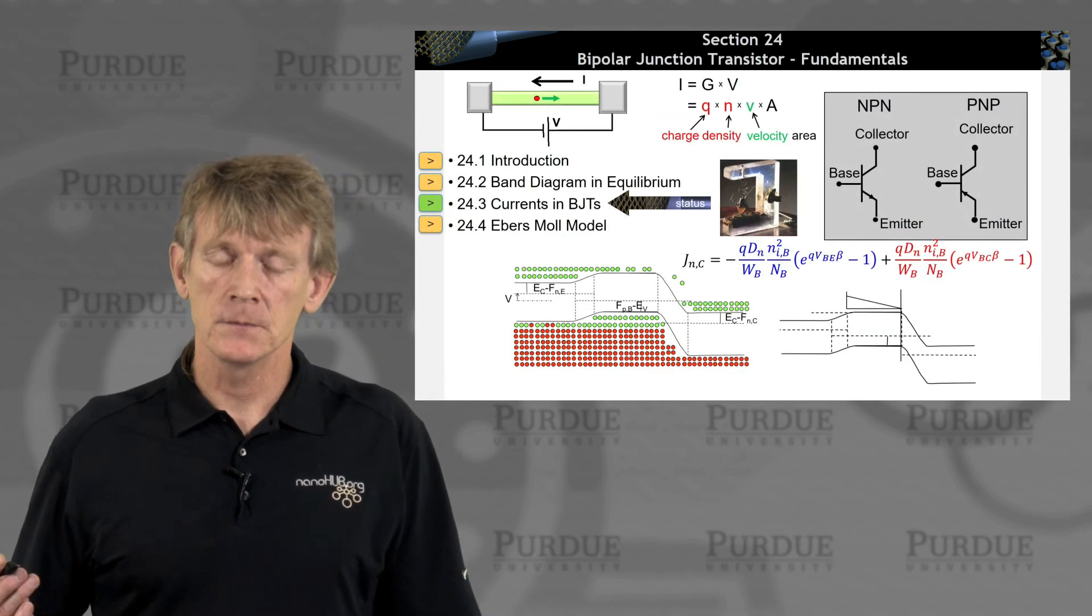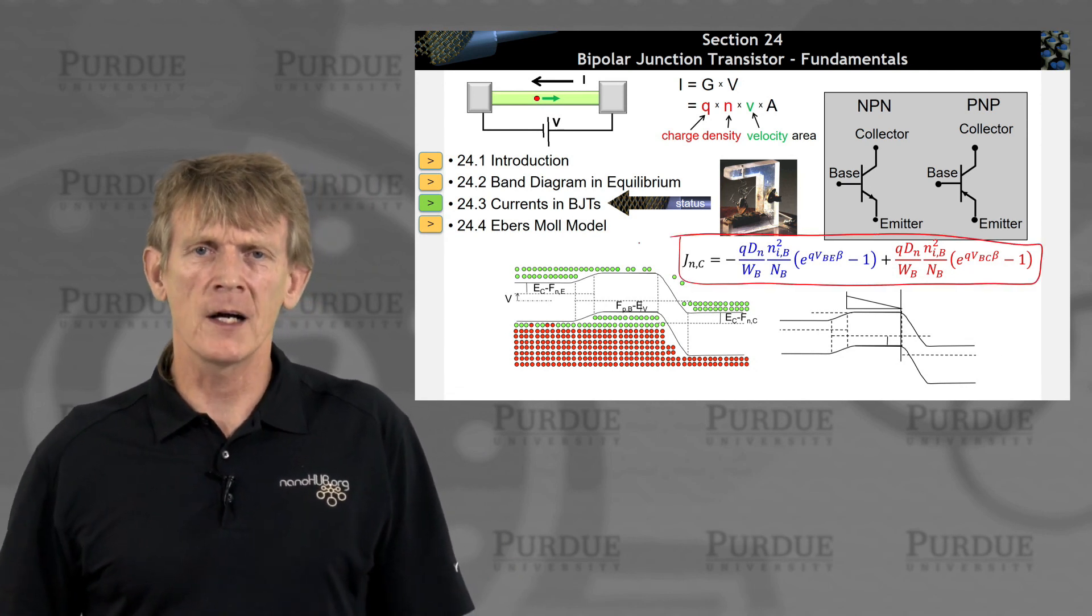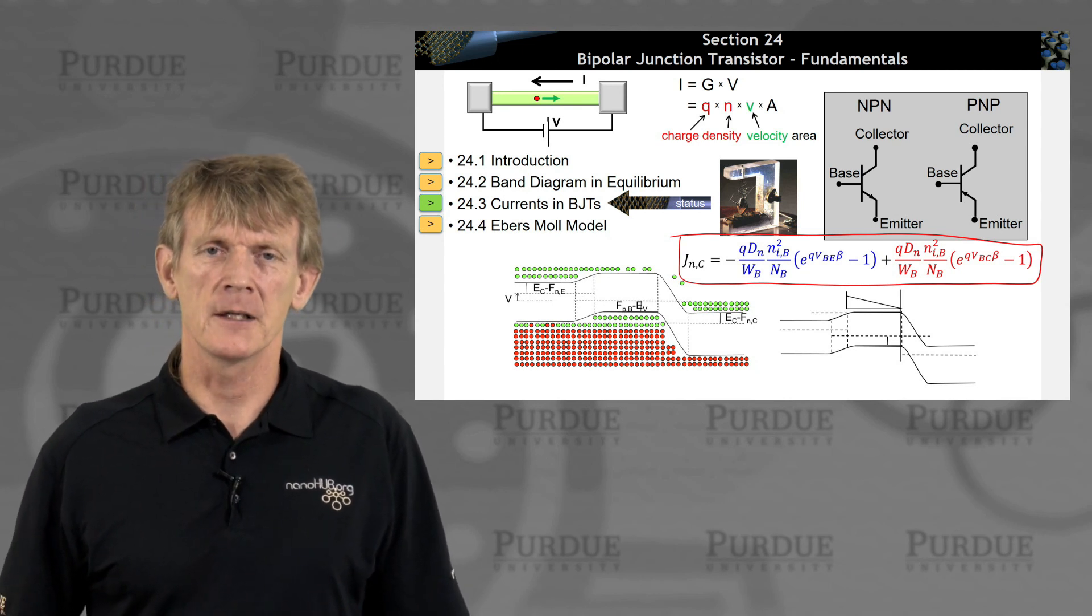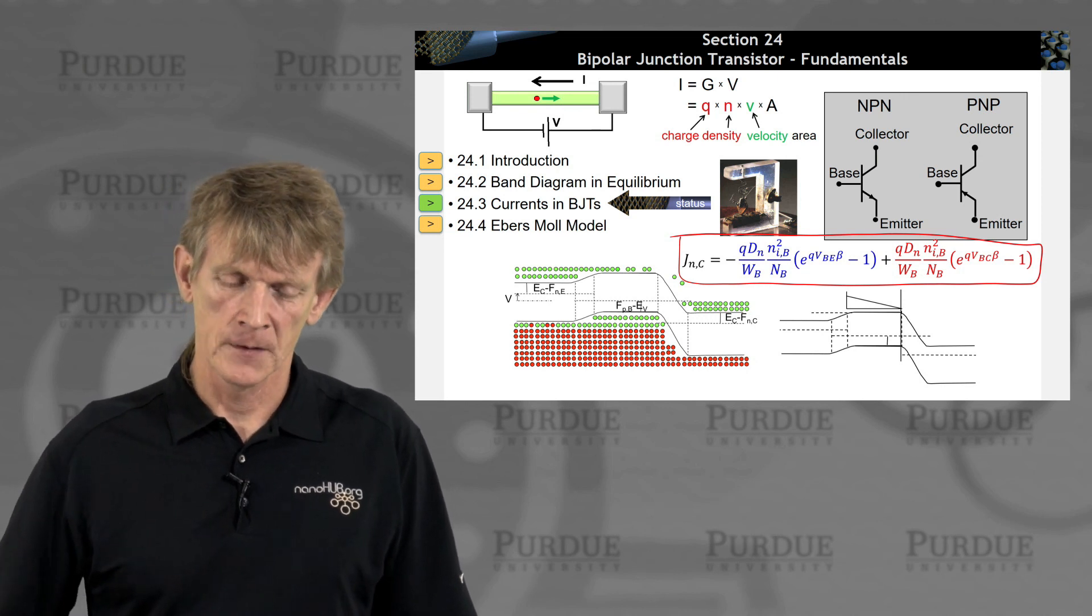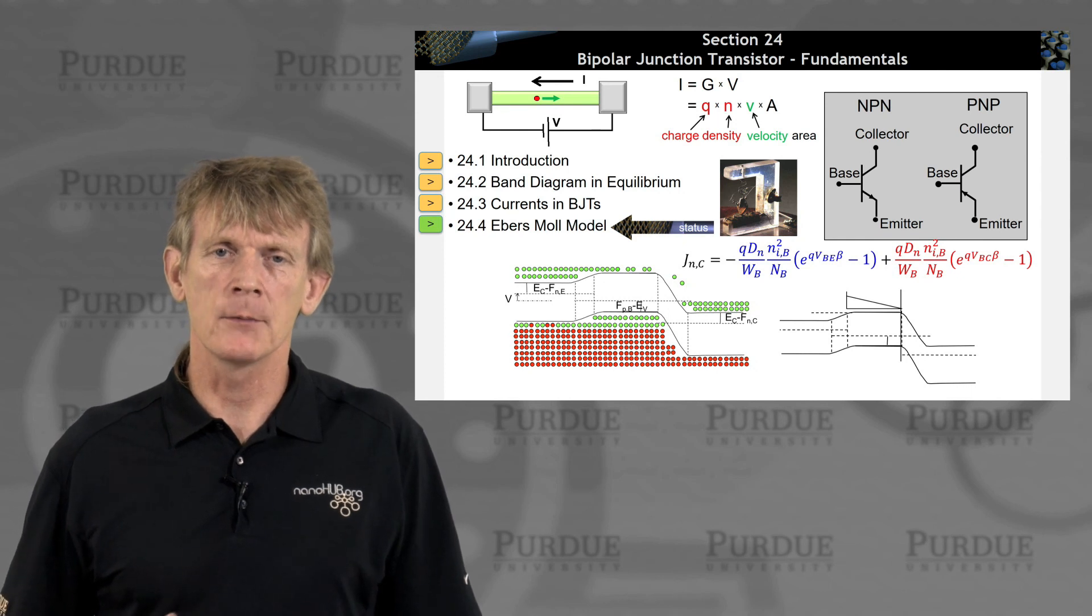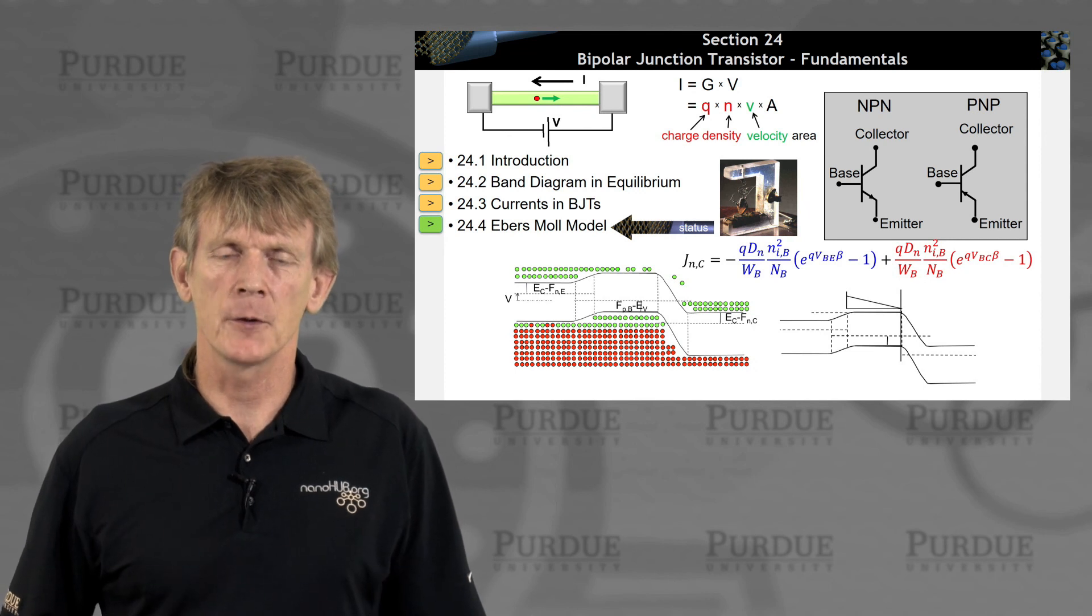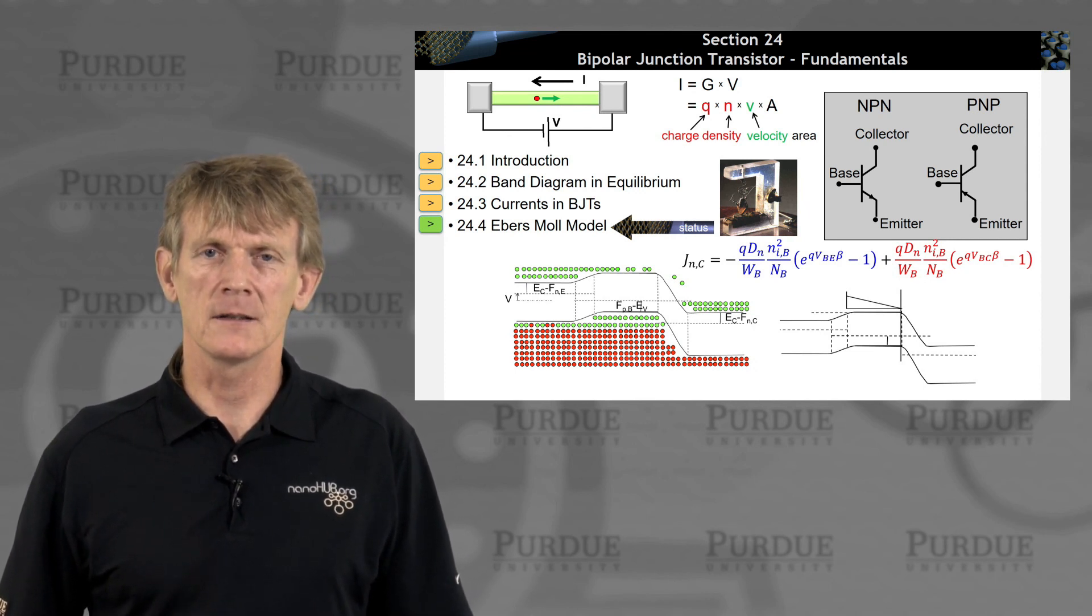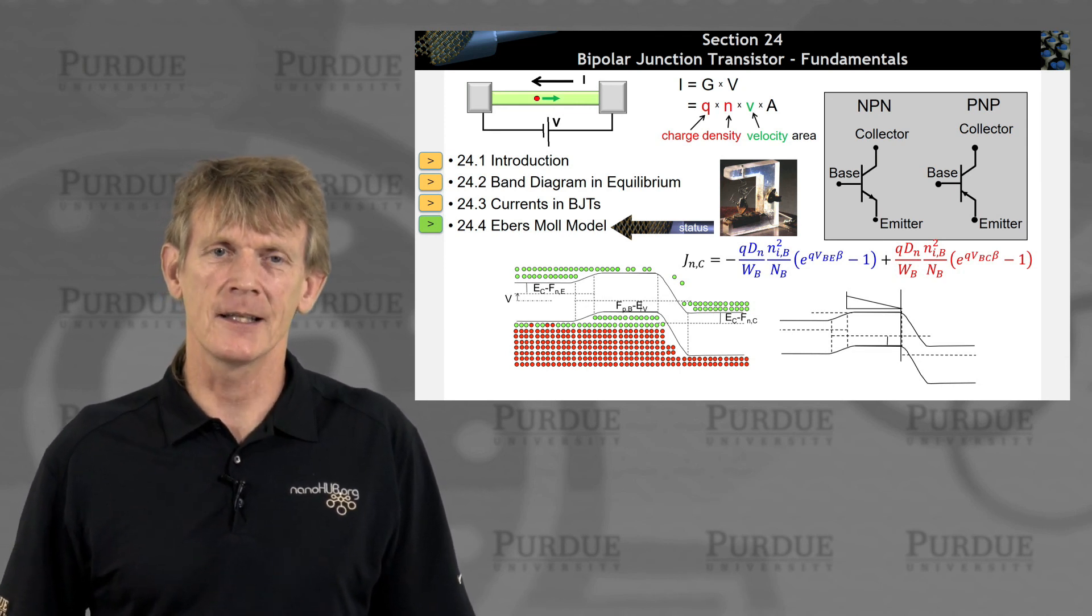So we have currents. Here's the current expression. We didn't spend hours deriving things. We just transferred our knowledge from PN junctions. That's the beautiful piece about these bipolar junction transistors. In the next section, we're talking about an Ebers-Moll model that completes this in a little bit more detail. I'll see you in the next section.